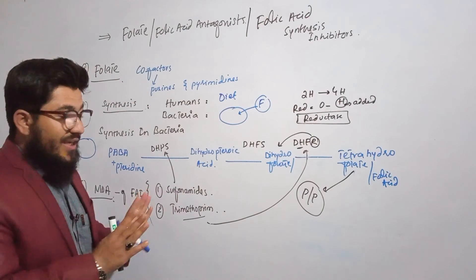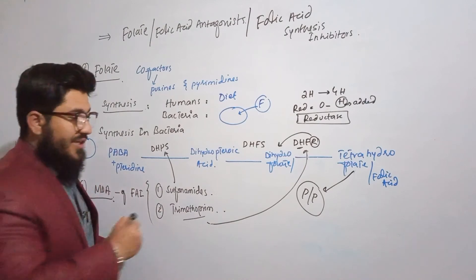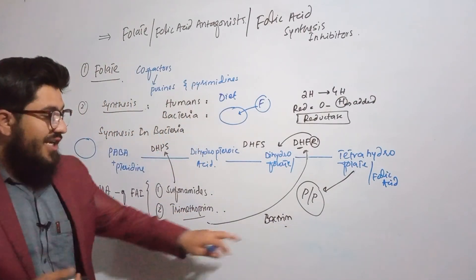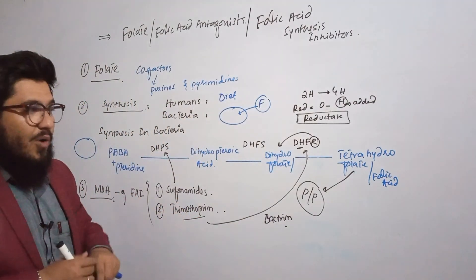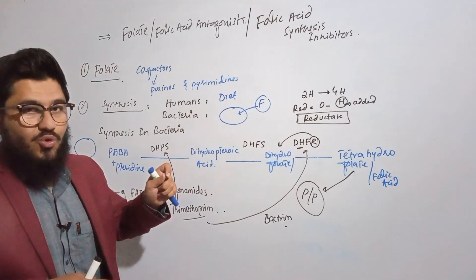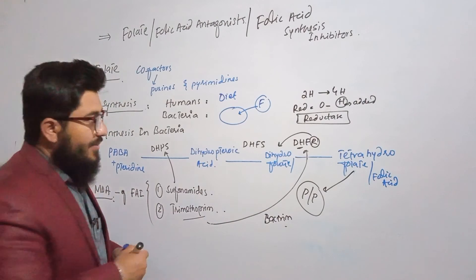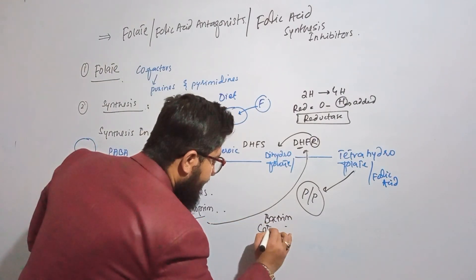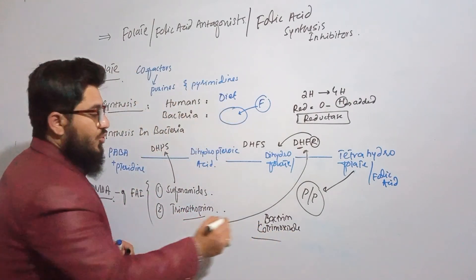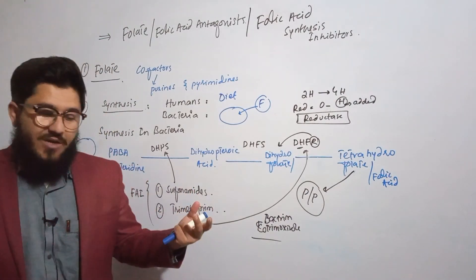Sometimes both medications are combined in a single medicine with the brand name Bactrim, which contains both sulfonamides and trimethoprim. If you want a synergistic effect, you can indicate both medications at once using Bactrim. Another name for this combination is Cotrimoxazole, and indicating both together will give a synergistic effect — meaning effect in a very short time.